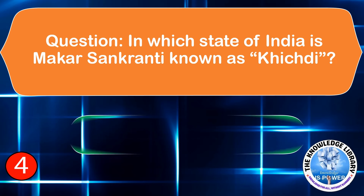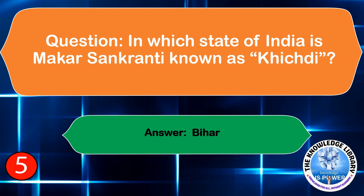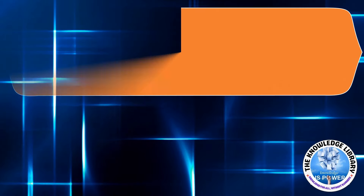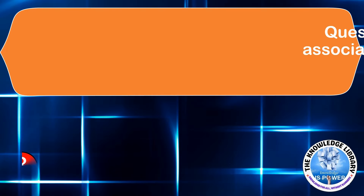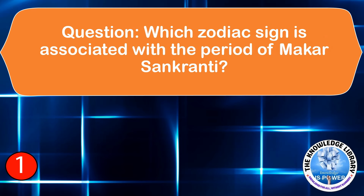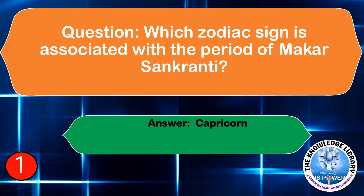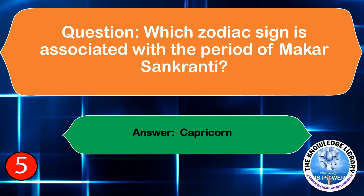The next question is: In which state of India is Makar Sankranti known as Khichdi? The answer is Bihar. The next question is: Which zodiac sign is associated with the period of Makar Sankranti? The answer is Capricorn.